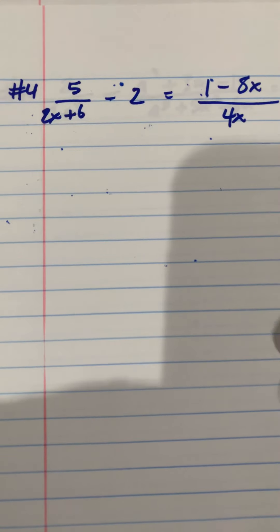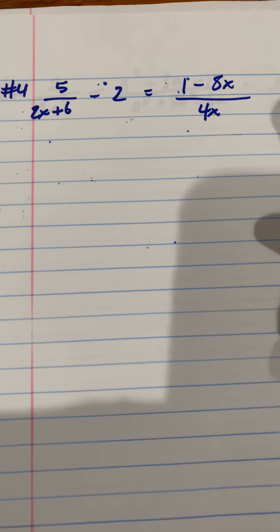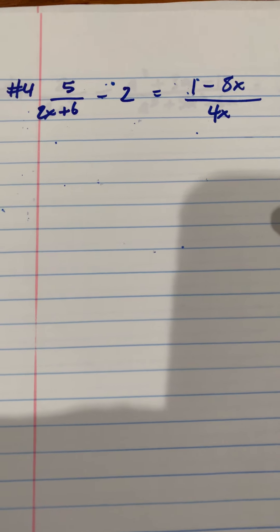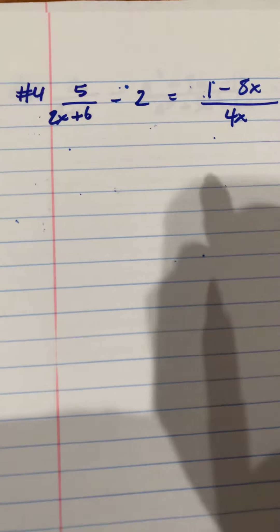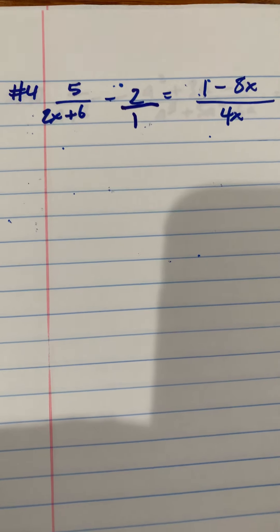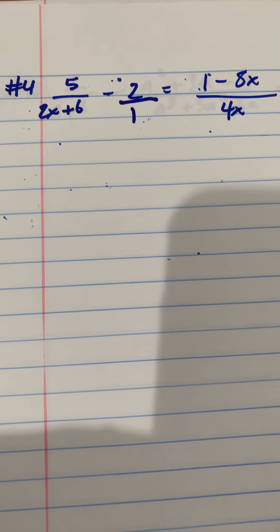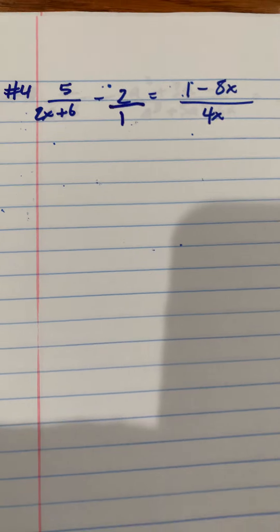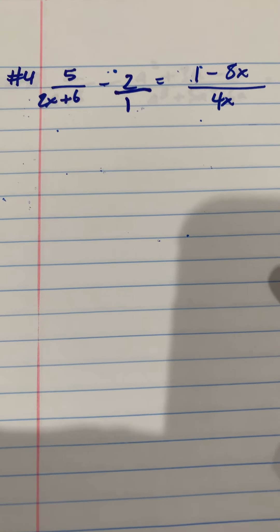Let's do another one from your work. A little more complicated here, but the same basic steps. We want to figure out what our common denominator is. Whenever you have a whole number, just put that whole number over 1. I like to look at it like that. Now, whenever something can be factored, go ahead and factor it.